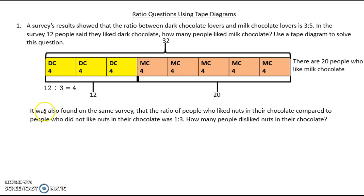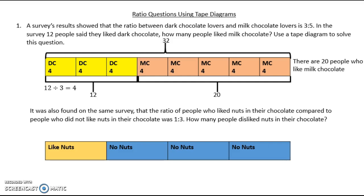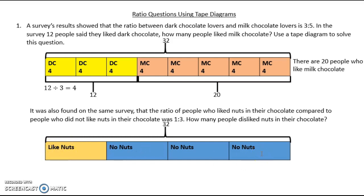The next part of the question says it was also found in the same survey that the ratio of people who like nuts in their chocolate compared to those who do not like nuts was 1 to 3. So I'm asking how many people dislike nuts in their chocolate. In a similar process, I need to create a tape diagram — one segment for those who like nuts and three segments for those who don't. Since it's the same survey, the whole diagram represents 32 people.